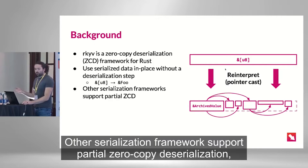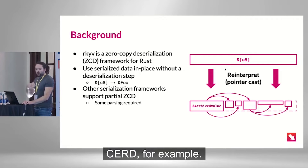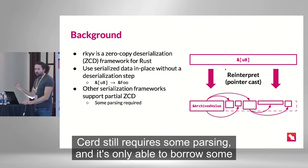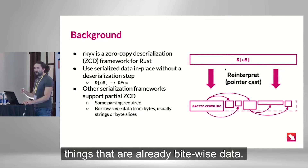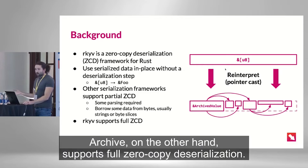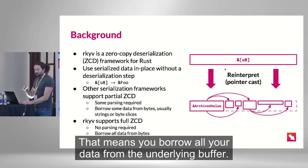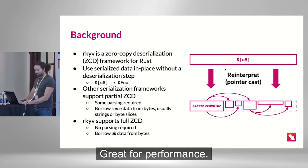Other serialization frameworks support partial zero-copy deserialization — CERD, for example. CERD still requires some parsing, and it's only able to borrow some of the data from the underlying buffer, usually strings or byte slices — things that are already kind of byte-wise data. Archive, on the other hand, supports full zero-copy deserialization. That means no parsing. That means you borrow all your data from the underlying buffer. Great for performance.